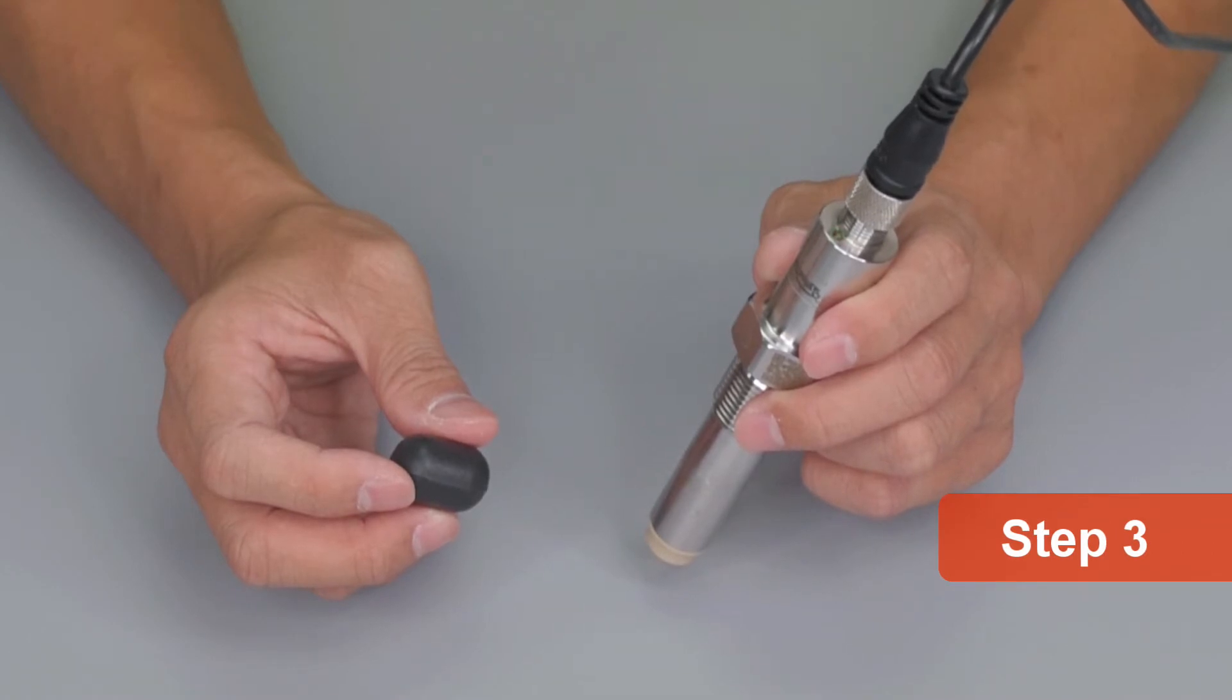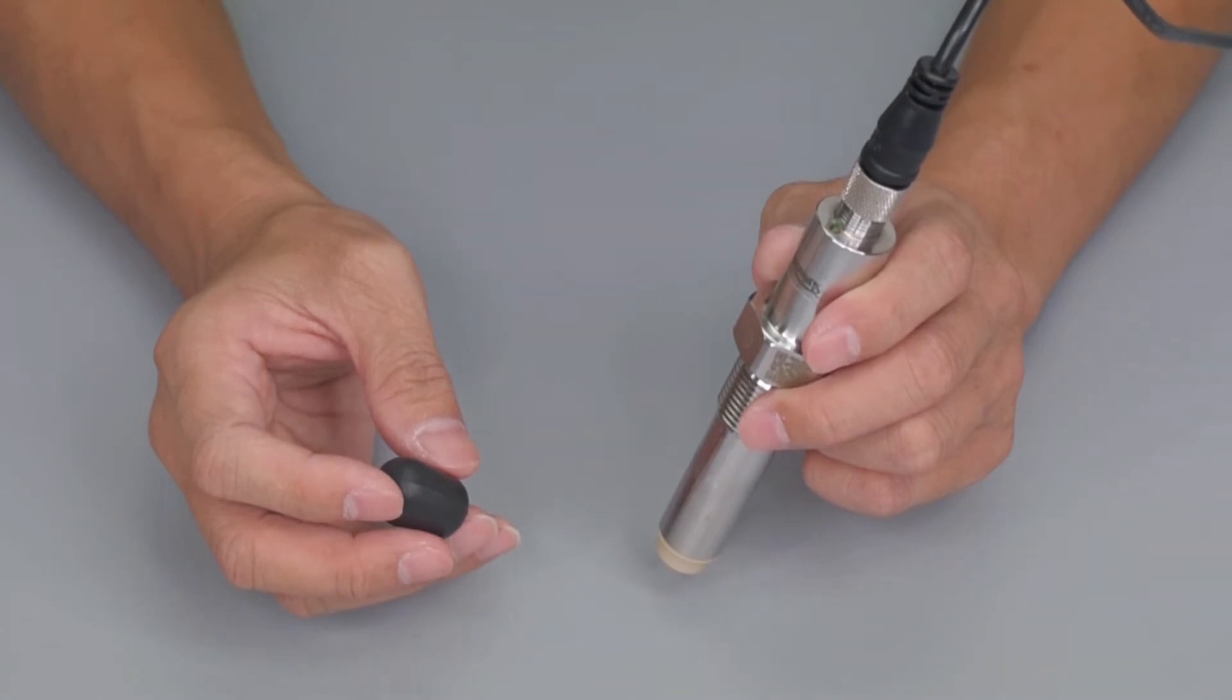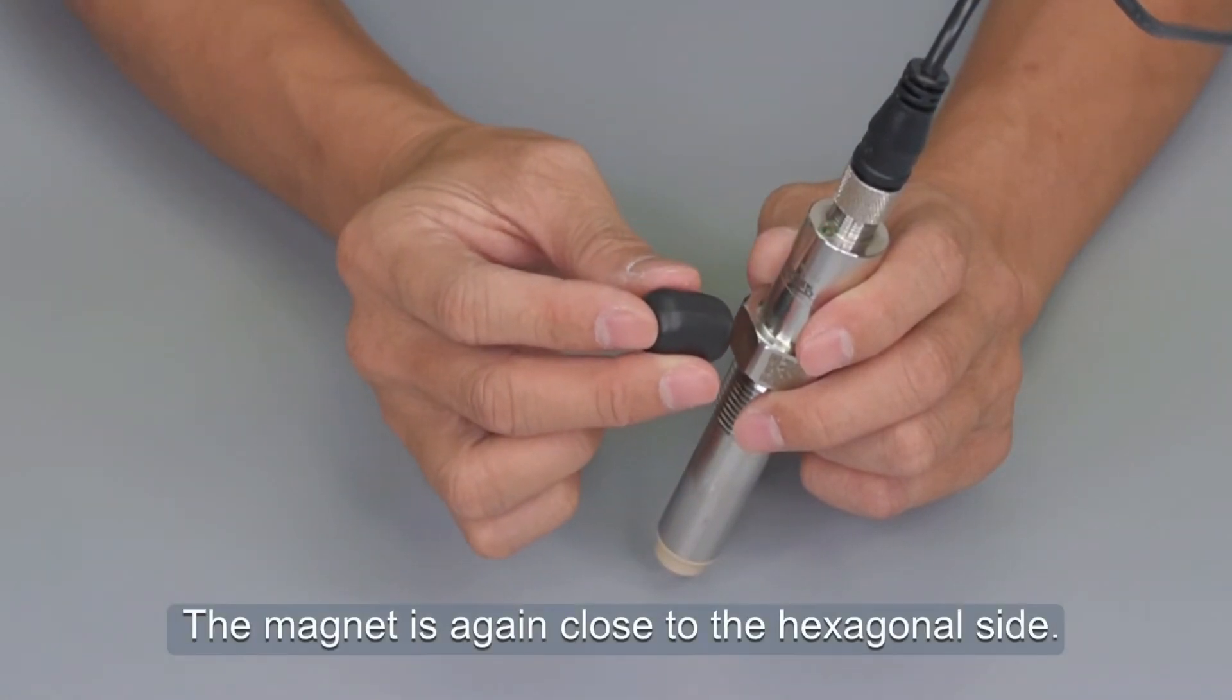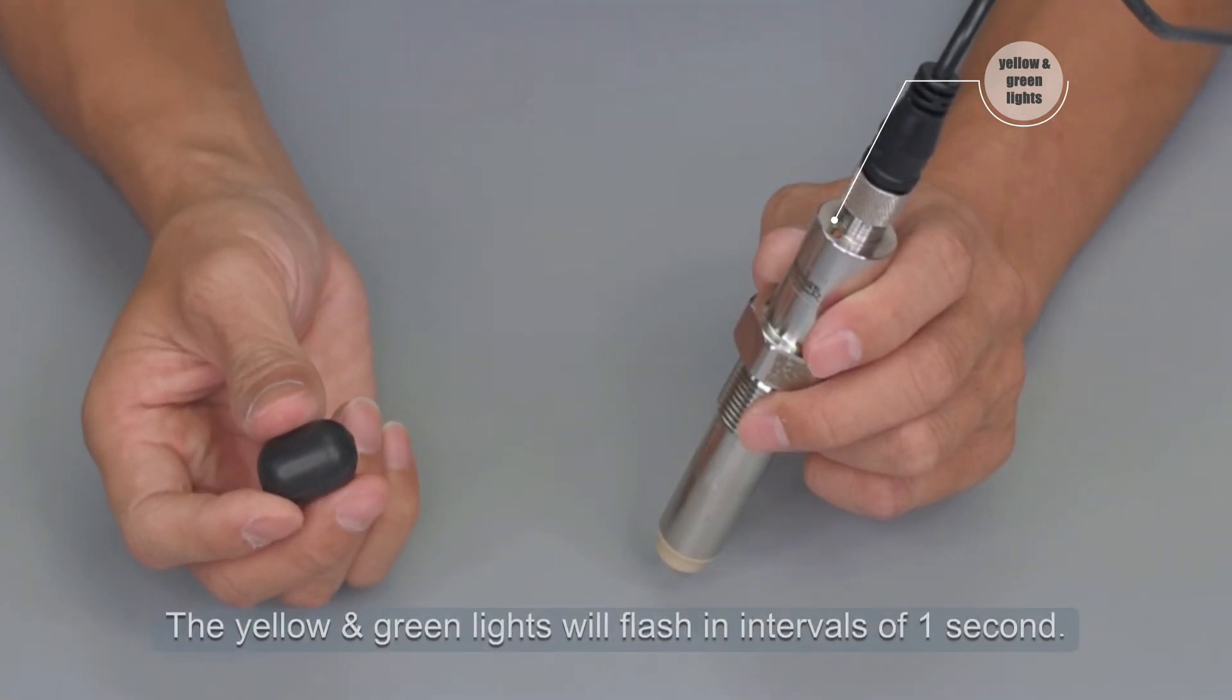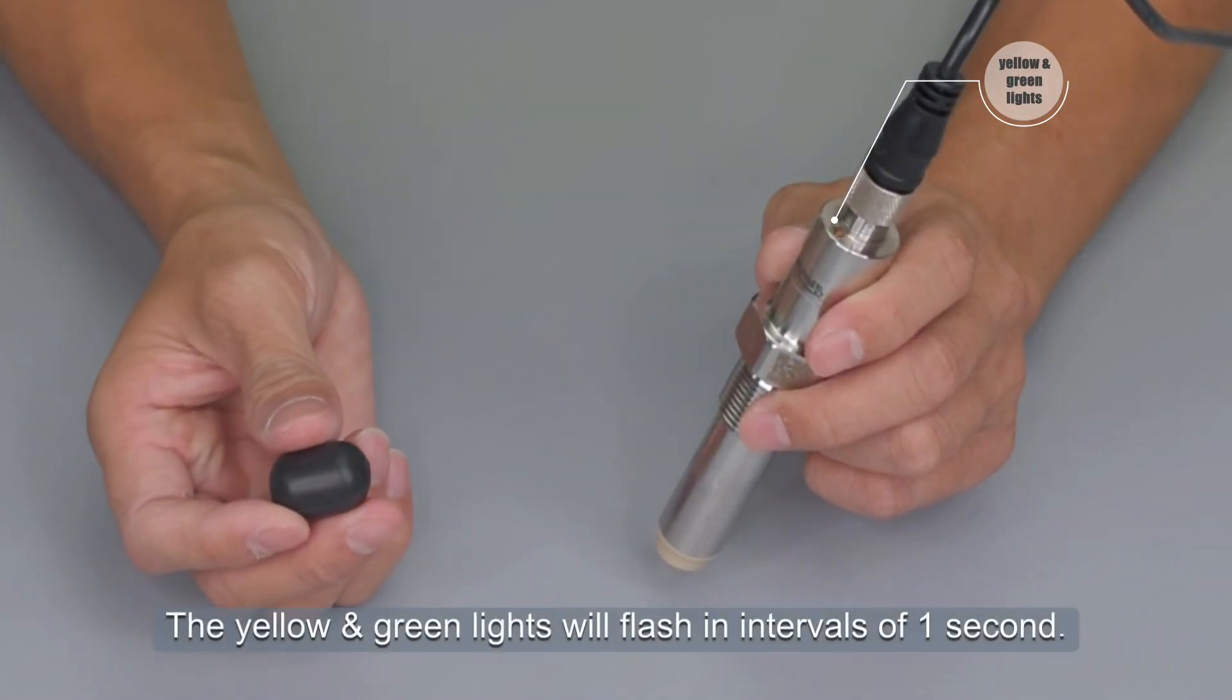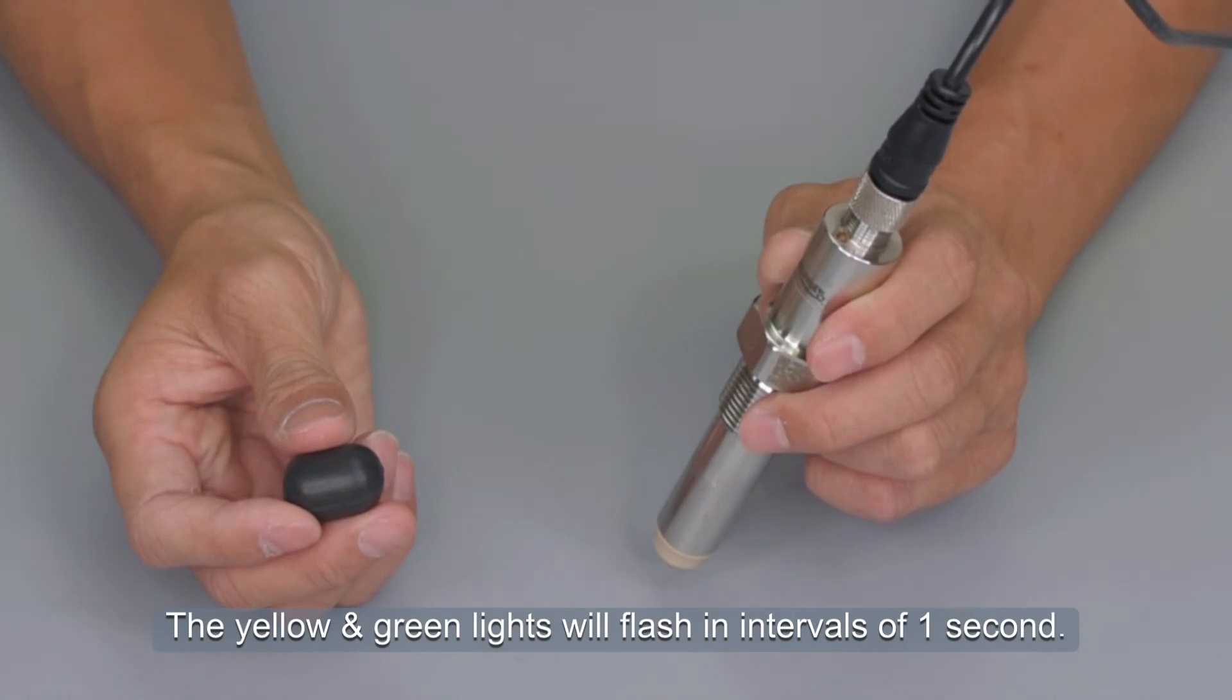Step 3. The prop must not touch any materials. The magnet is again close to the hexagonal side. Move the magnet away after 1 second. The yellow and green lights will flash in an interval of 1 second. At this time, the impedance measurement sensor will not be in contact with the materials.